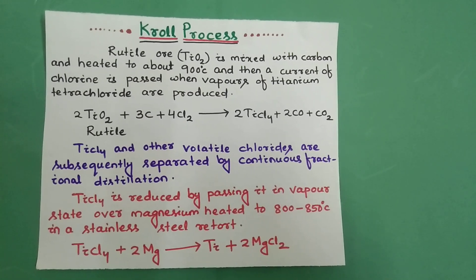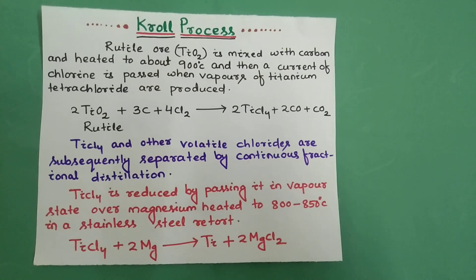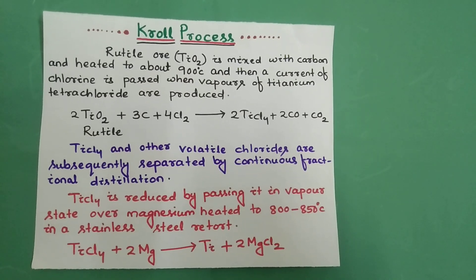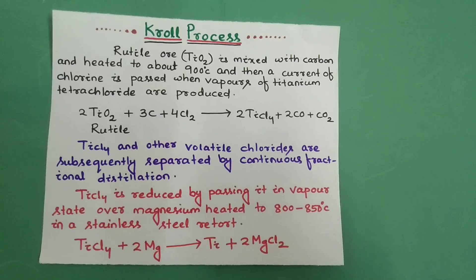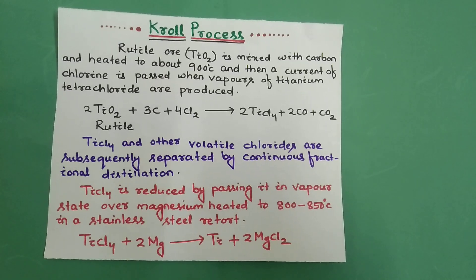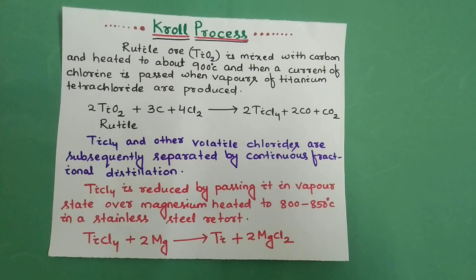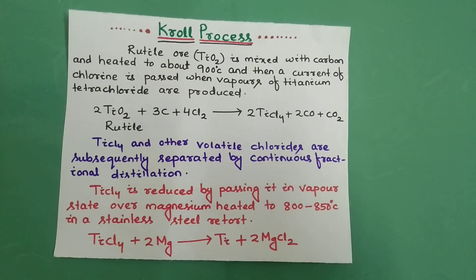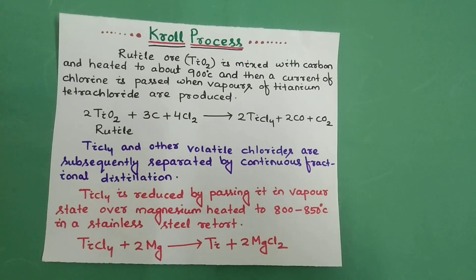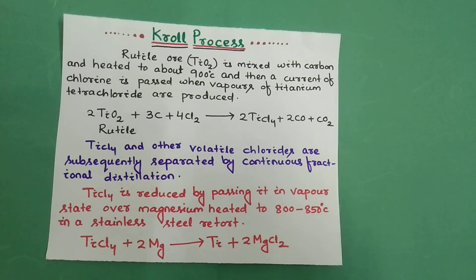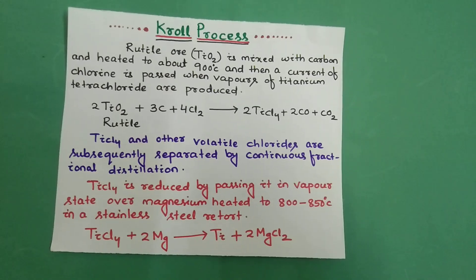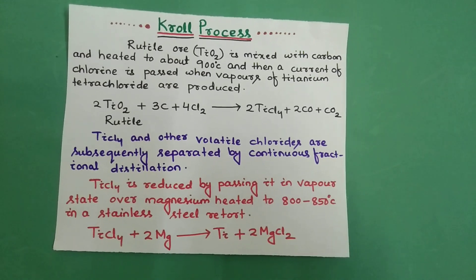Hello everyone — students and teachers. Today we will discuss the Kroll process. Rutile ore is mixed with carbon and heated to about 900°C, then a current of chlorine is passed. Titanium dioxide (rutile) reacts with carbon and 4 moles of Cl₂, producing TiCl₄ along with carbon monoxide and carbon dioxide.